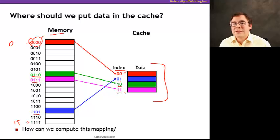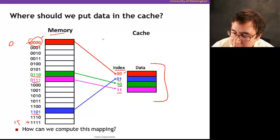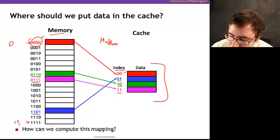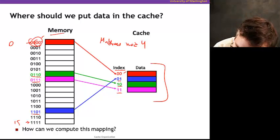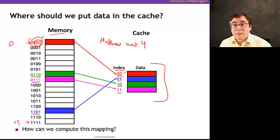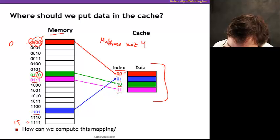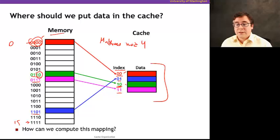Did you notice something about how we compute where the data goes into the cache? It's just modular arithmetic — I get the memory address and do mod 4, which is the same thing as getting the low-order bits. I use the two low-order bits of the memory address to address the cache. So if I get the two low-order bits of an address, I determine the index.